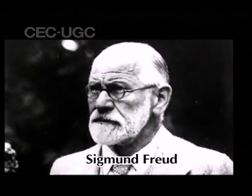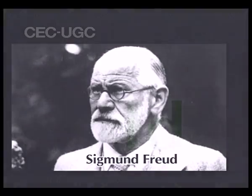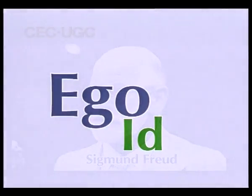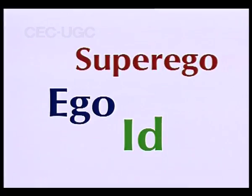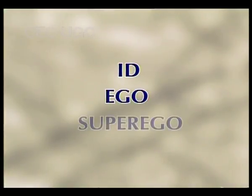With types, we have another very important theory given by Sigmund Freud. He has divided the whole personality into three structures: id, ego, and superego. These are the structural compositions of personality. So we have id-type personality, ego-type personality, and superego-type personality.